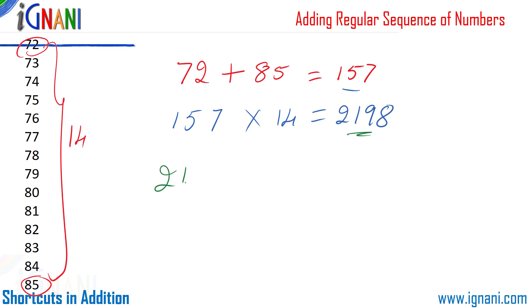The final step is taking this 2,198 and divide it by 2, and we get the result. Notice we started at 72 somewhere in between, and then we ended at 85—that was 14 digits—and still we got the exact result.